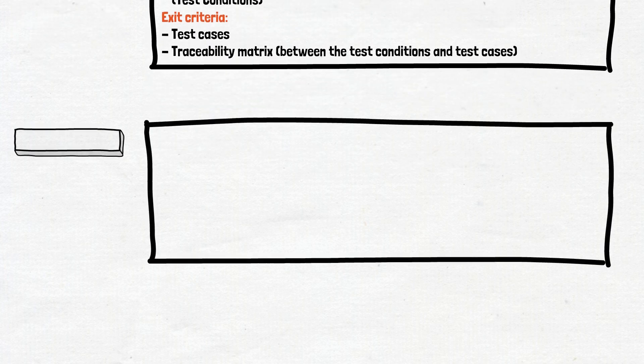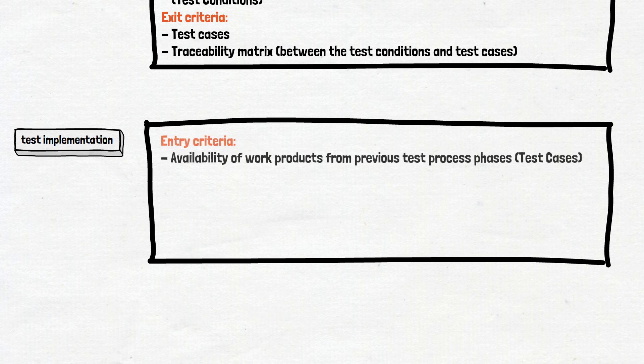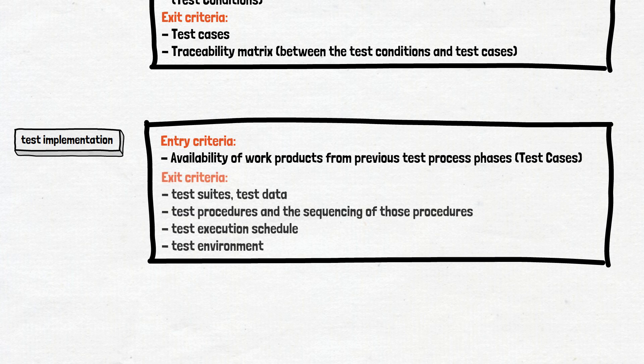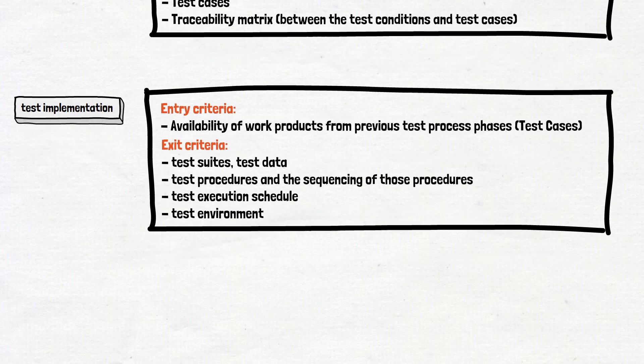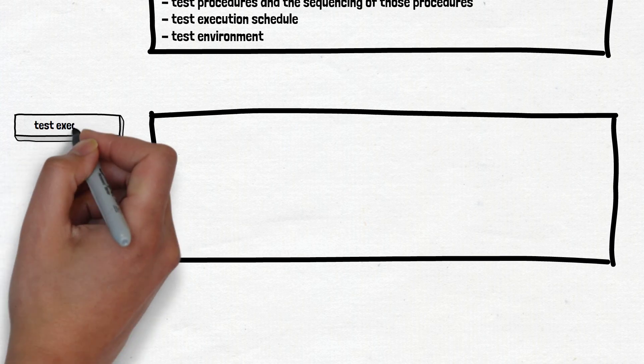Now that the tests are written, it's time to move on to the next phase. Test implementation is an activity that involves preparing everything needed to start testing. The entry criteria for it are test cases — they are grouped into test suites, and test procedures are created that determine the sequence of running test suites. The test environment will also be set up, which is the main entry criteria for starting the next phase of the test process: test execution.